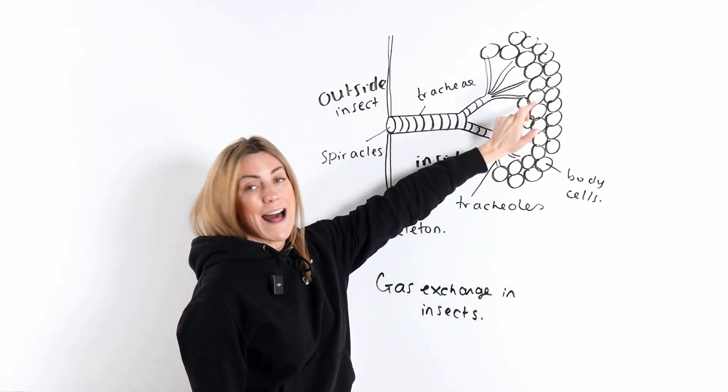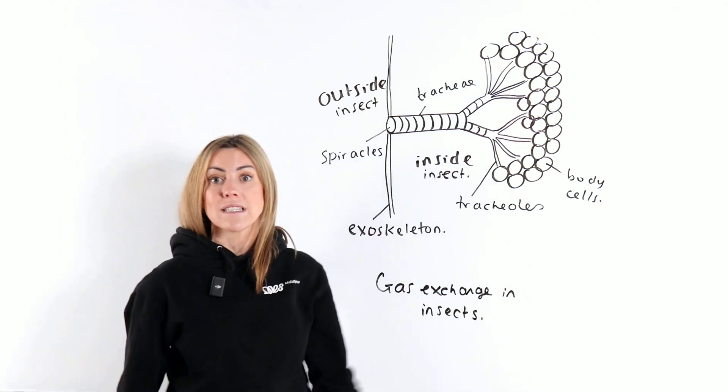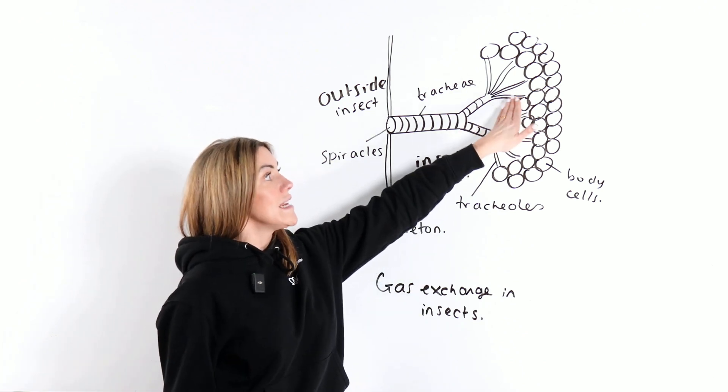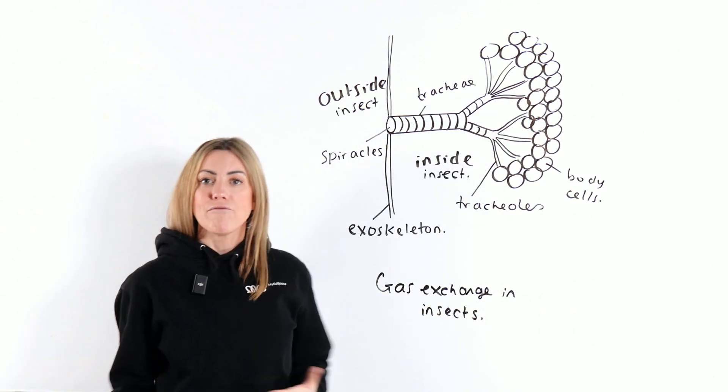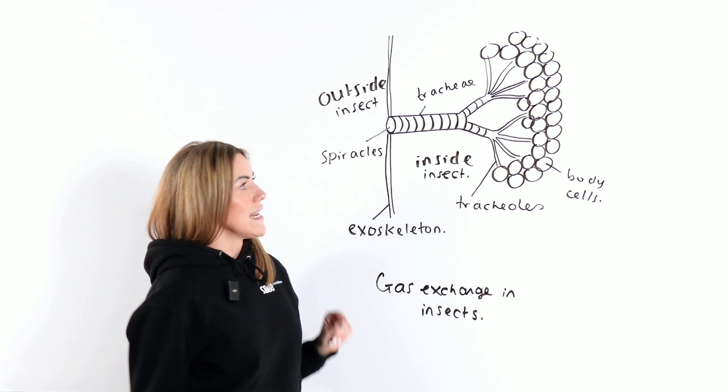Gas exchange is going to take place between the ends of the tracheoles and the body cells themselves, because the body cells need oxygen for respiration and they need to exchange carbon dioxide in the other direction and get rid of the carbon dioxide that they've made in respiration.